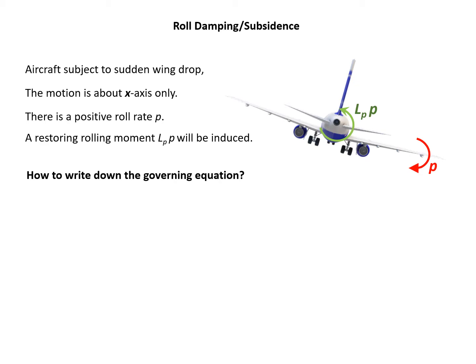How can we write down the governing equation so we can study mathematically? According to Newton's second law, every governing equation needs to start from Newton's second law. We have the rolling moment equals Lp times P, and it's produced by acceleration of the rolling rate, so we have Ix times P dot, that's acceleration in roll.